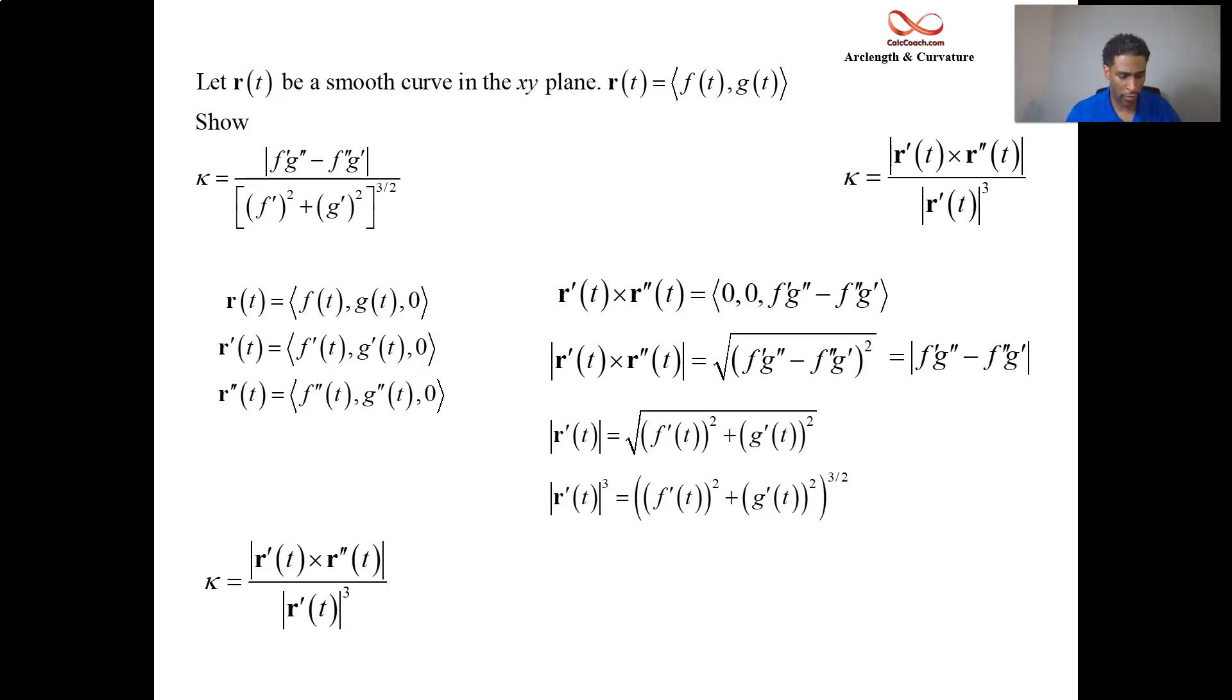So yeah, the formula for curvature, when you have a 2D parametric function, where the i component is the f, the function f, and the j component is the function g, you plug into this formula.